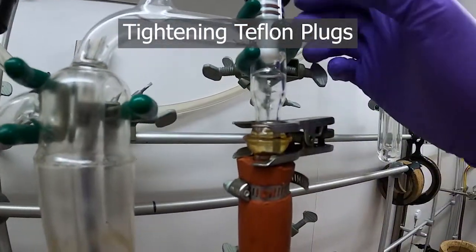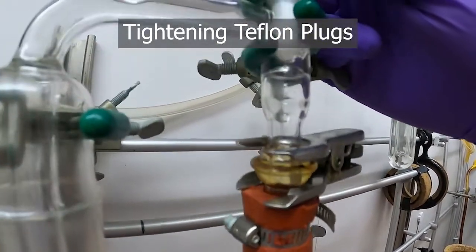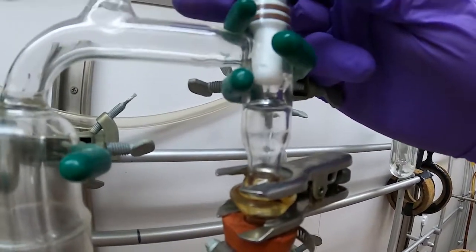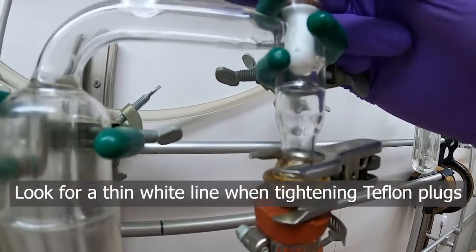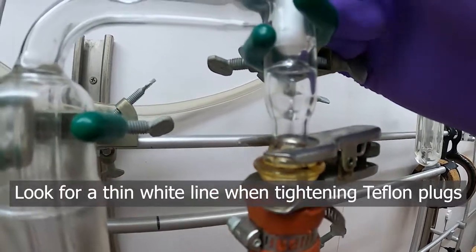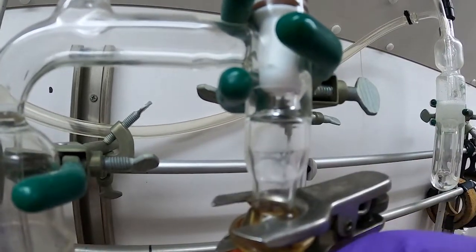So Teflon stoppers are notorious for being easy to over tighten. So you can look at the stopper itself and you can see this kind of thin white line up here on the glass. About right there. You can see that. That means you've got a good seal and that's all it takes.